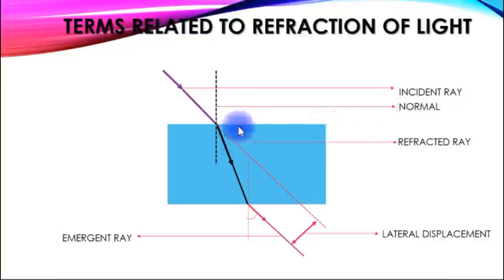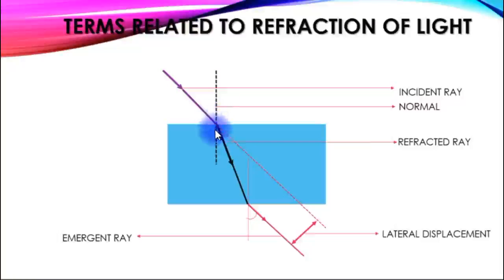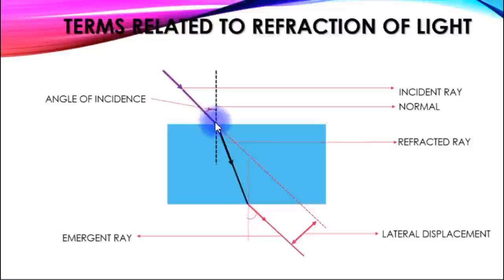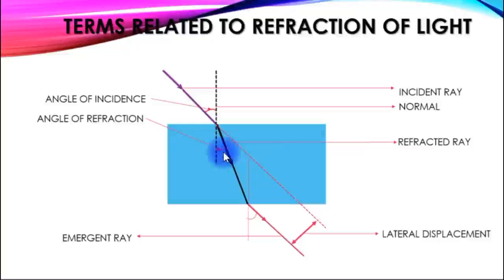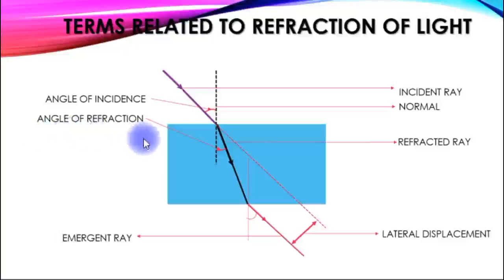This is the normal at the point of incidence. The point of incidence is the perpendicular line on the surface. The angle of incidence is measured from the normal to the incident ray. The angle of refraction is measured from the normal to the refracted ray.